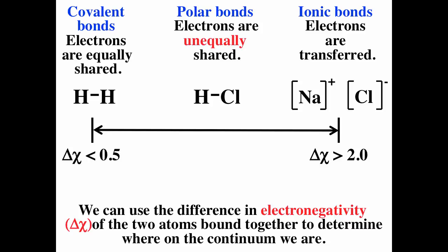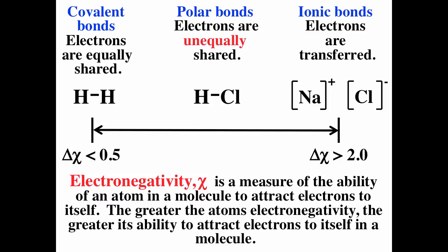Remember that difference of electronegativity is always defined as positive — you always take the bigger electronegativity minus the smaller one. Electronegativity is the ability of an atom to attract electrons to itself in a molecule. The greater the atom's electronegativity, the greater its ability to attract electrons. Fluorine is the most electronegative with an electronegativity of approximately 4. Difference of electronegativity is very helpful for determining whether a bond is polar or nonpolar — whether the bonding electrons are shared equally or unequally.